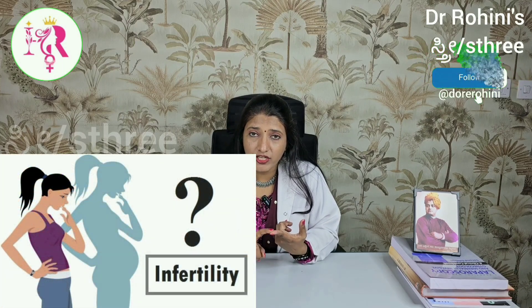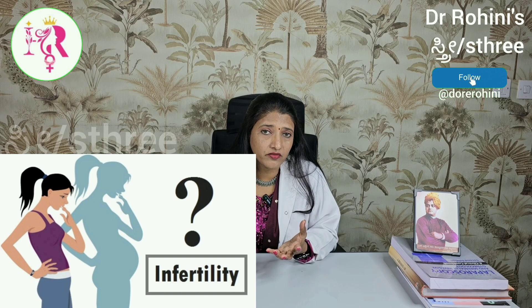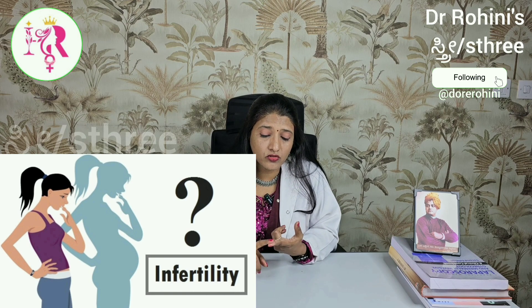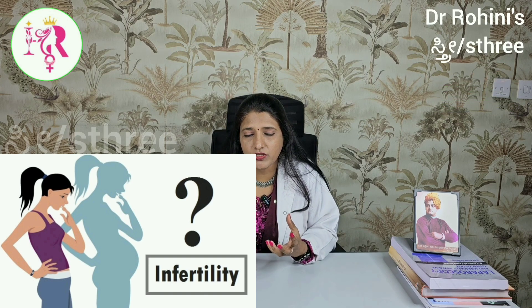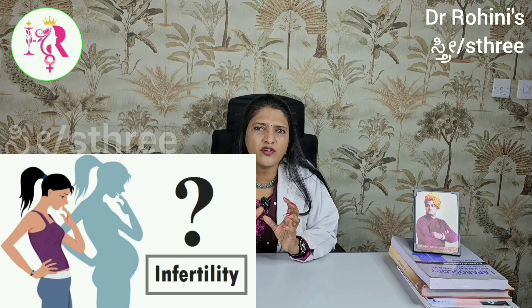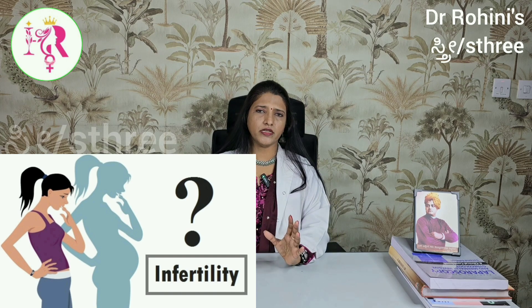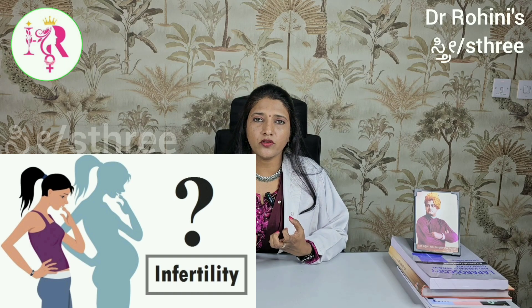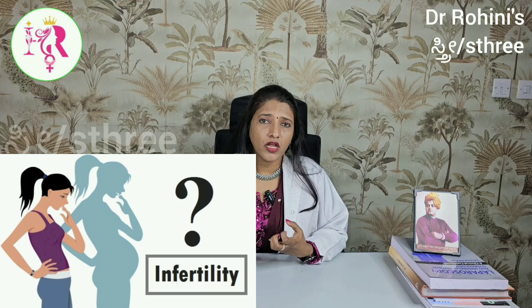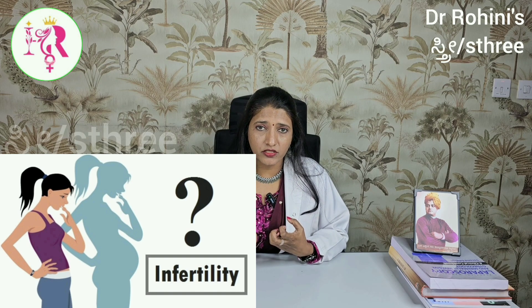The other problem is infertility, because there is no ovulation. The chances of infertility are very high, and also the quality of the eggs in PCOD is very poor, which delays conception. Additionally, the endometrial receptivity — the quality of the endometrium which needs to receive the embryo after fertilization — is also poor in patients with PCOD. These are the reasons for infertility.